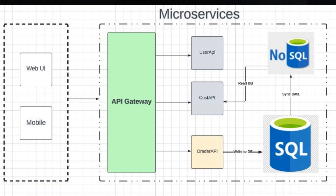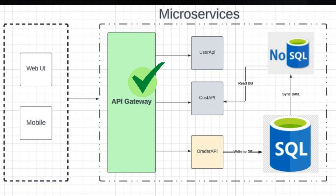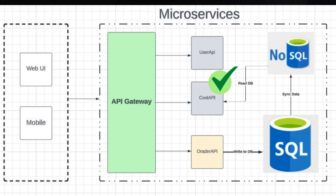That is how the read database is fast - you just request the information and it's ready to send back to the UI. Looking at this diagram specific to microservices: we have two applications - a web UI and a mobile UI. Operations go through the API gateway, following best practices. According to the request, it routes to different microservices. The order API writes data into the write database which is SQL (RDBMS). The cost API only reads data from the read database. An event bus system syncs data between the SQL write database and the NoSQL read database. That's how CQRS works in microservices.